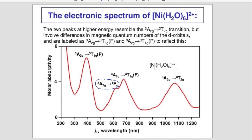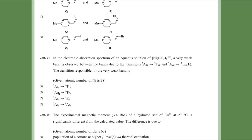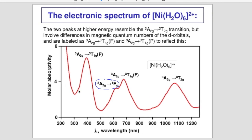There are two reasons why this is a weak band. First, it involves a weak field ligand, so this transition is not highly favorable. Second, the spin multiplicity is changing, making it a spin-forbidden transition. It is also Laporte-forbidden. So the band becomes weak because of both spin-forbidden and Laporte-forbidden selection rules. Coming back to the GATE question, the transition is from 3A2g to 1Eg.